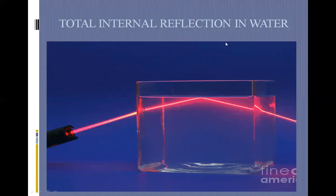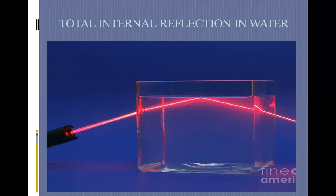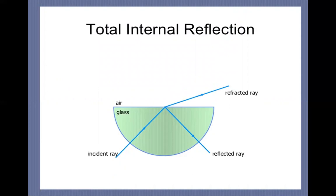This image shows total internal reflection in water experimentally. When we take water in a glass rectangular block and pass laser or monochromatic light — light with a single wavelength — through it, at a certain angle total internal reflection occurs. The angle of incidence must be greater than the critical angle. This is the same phenomenon shown in a semi-circular glass block — only the shape changes; here the denser medium is glass. These types of diagrams often appear in your paper, so practice them carefully in your copy using a scale.